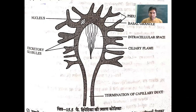From the basal granules, the cilia emerge into the intracellular space. If living cells are observed under a microscope, all these cilia are seen moving like a flame. This is why this cell is called a flame cell.